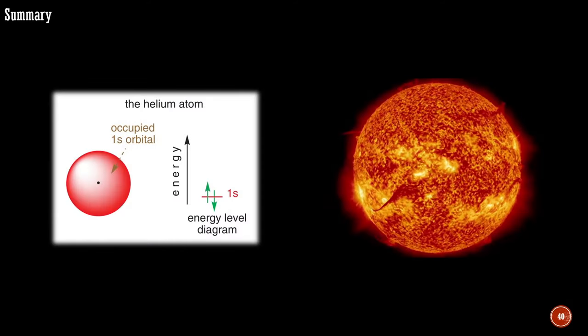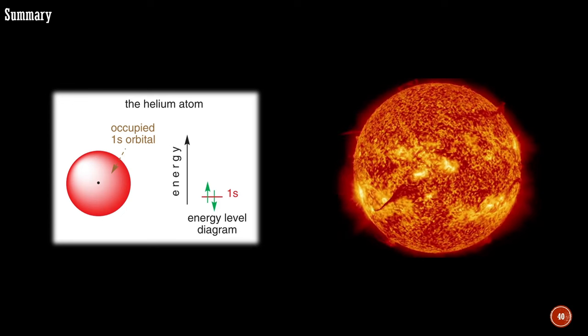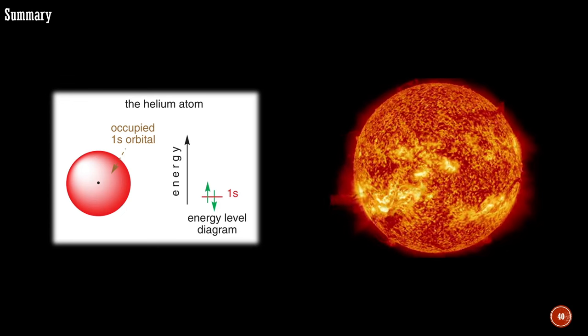Helium's two electrons fill only the 1s orbital, but with an input of energy, such as the intense heat in the sun, one of them can move up into the previously empty 2s, 2p, or 3s orbitals. In fact, it was the observation of the energy absorbed by this process from Earth that led to the first discovery of helium in the sun.